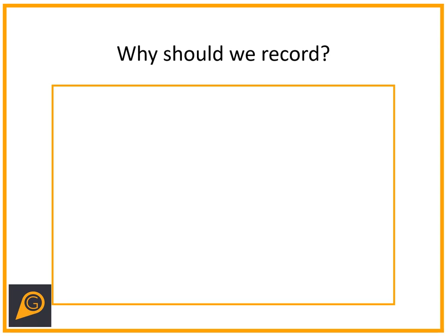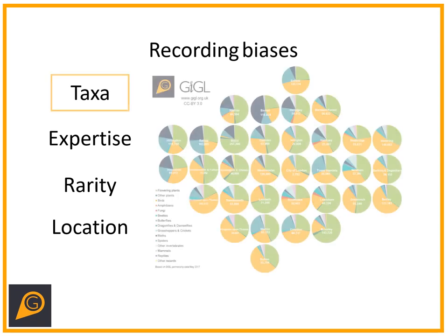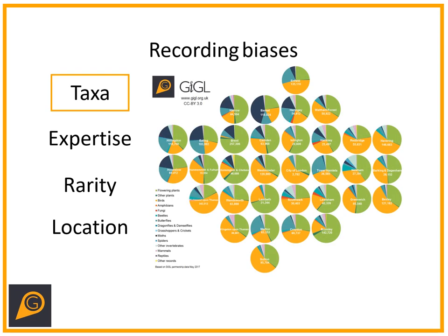It's very important to note that there are some biases that can appear inherently in our recording. The biggest is taxa bias — people tend to record things they like, that are easier to find, or that are abundant. Butterflies, birds, and plants tend to be the big winners in this category. Most of our records are birds, butterflies, or plants — they're popular groups, and birds in particular have quite a low barrier to entry.